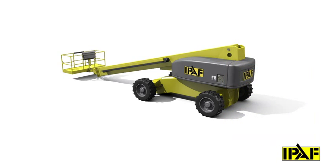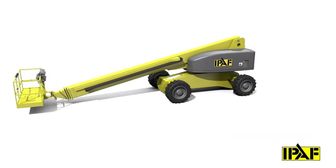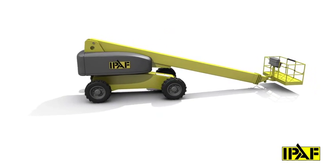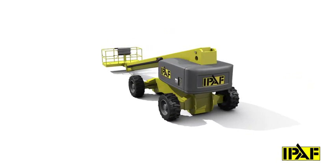Starting with the boom in the lowered position, working clockwise from ground controls, visually inspect the machine for damage, cracks, leaks, damaged or missing components, excessive wear and decal condition.